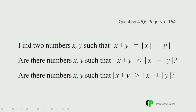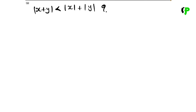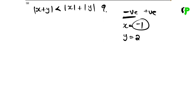Now let's say x plus y is less than absolute value of x plus absolute value of y. Let's try one positive and one negative: x equals negative 1 and y equals 2. The absolute value of negative 1 plus 2 equals 1, and modulus of negative 1 plus modulus of 2 gives 1 plus 2 equals 3.